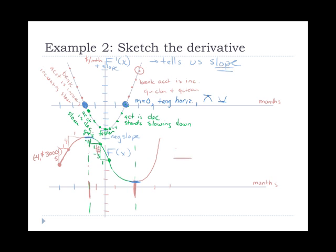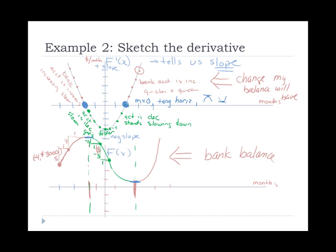After x=2, we're back in positive slope territory that's getting steeper, so the bank account starts growing slowly and then shoots up. All points on the function graph represent the bank balance; all points on the derivative graph represent the rate of change of that balance. Companies look at this all the time — they want to know when they'll hit pitfalls, when they'll max out, and whether they can make it through the rough periods.